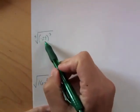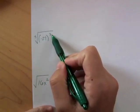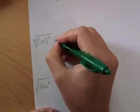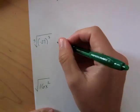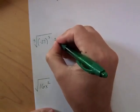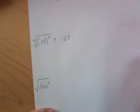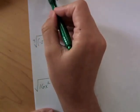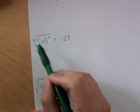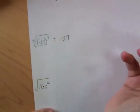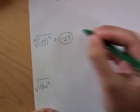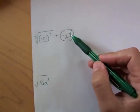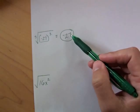Now, the cubed root of negative 27 cubed. This is an odd index, which means negative answers are totally fine. Negative 27 cubed is the same thing as negative 27 times negative 27 times negative 27, and the answer is just negative 27. Here we have the cubed root of something cubed, so we just use that number. Since the index is odd, negative numbers are fine and we don't need to take the absolute value.